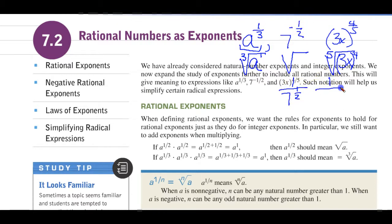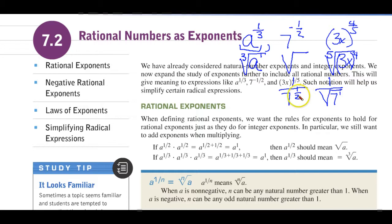This now becomes 1 over, and then we use our radical sign, and it's 7 to the first power. The 2, which is in our denominator, becomes our index number. Since we don't write 2s when they're there, that would be what this one is. So they're showing you a little bit of a value here.